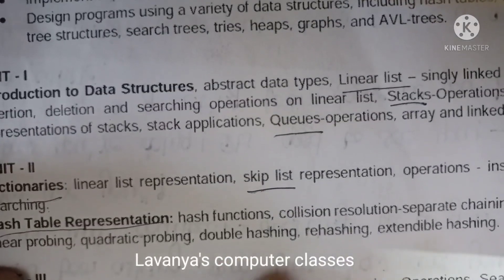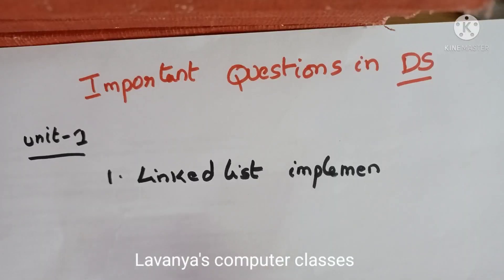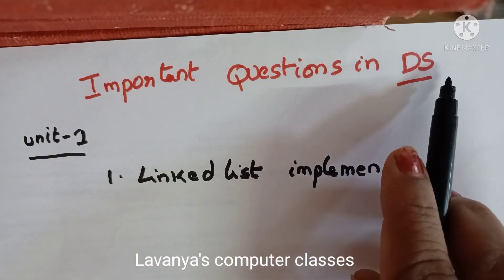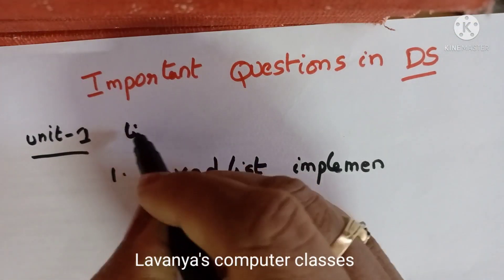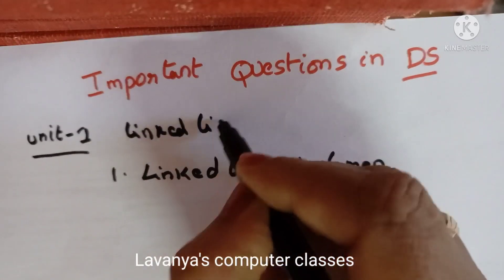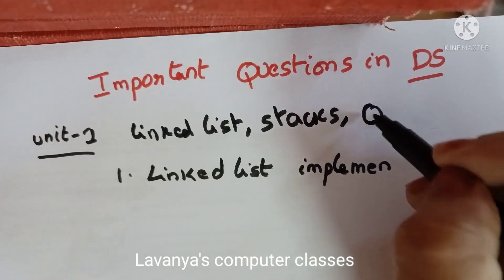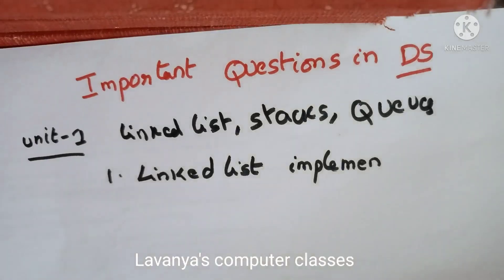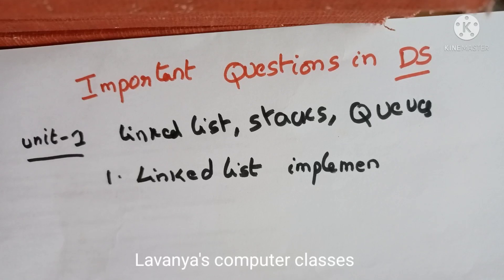I will explain important questions in data structures according to JNTL syllabus. Unit 1 contains three topics: one is linked list, stacks, and queues. If we want to read unit 1, we have to concentrate on these three topics. First we go for all three topics and their implementations.